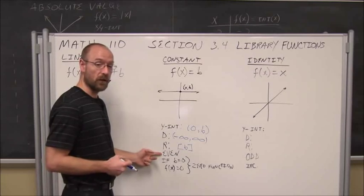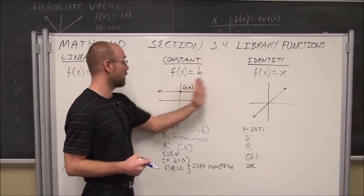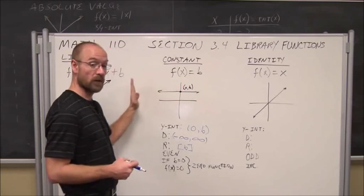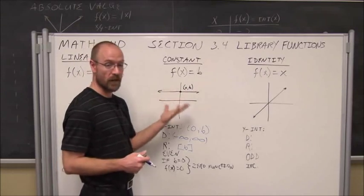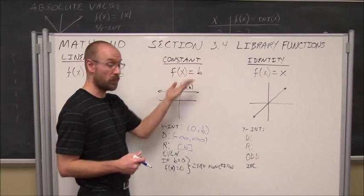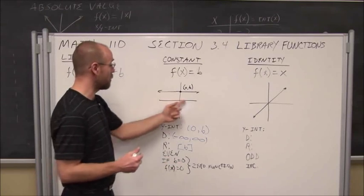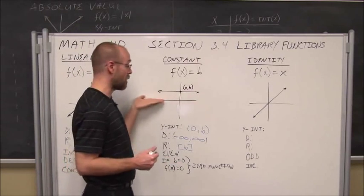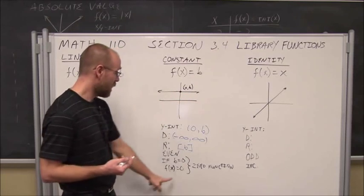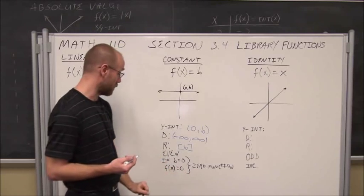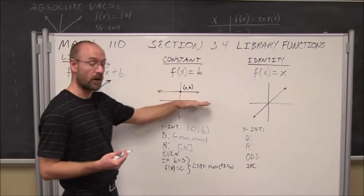The constant function is also an even function, because it's symmetric with y — what's on the right side is mirrored to the left. It doesn't matter if x is positive or negative; you get the same y value, hence being constant. If b equals 0, the line sits right on the origin — a horizontal line at the origin is the x-axis itself, and we call that the zero function, where f of x equals 0.